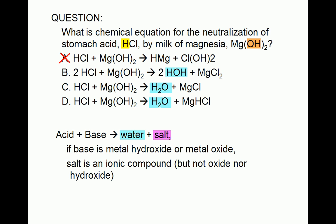To figure out the salt, we simply combine the cation from the base, in this case magnesium, with the anion from the acid, in this case chloride. Therefore, the salt is magnesium chloride.